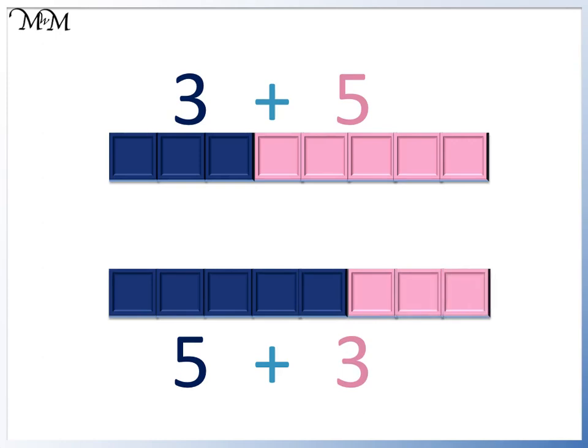The answer to the top sum is 1, 2, 3, 4, 5, 6, 7, 8. The answer to the bottom sum is also 1, 2, 3, 4, 5, 6, 7, 8.